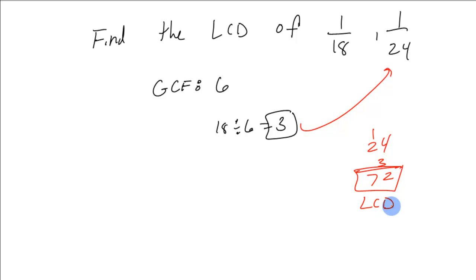72. Shown the other way, 24 divided by 6 equals 4. Multiply it times the 18. 72, the LCD.